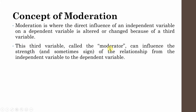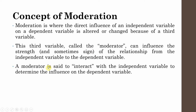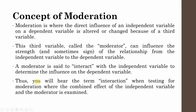This third variable is called a moderator, and it can influence the strength and sometimes the sign — that is, it can change the relationship from positive to negative or negative to positive. A moderator is said to interact with the independent variable to determine the influence on the dependent variable.